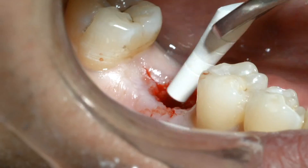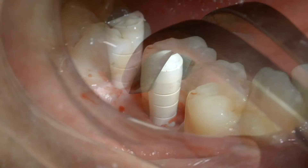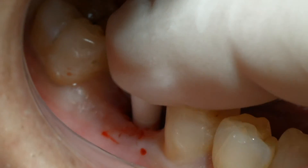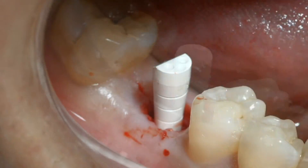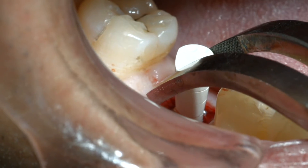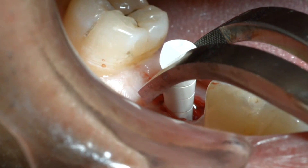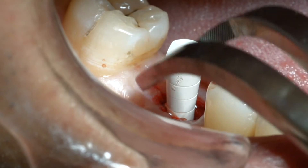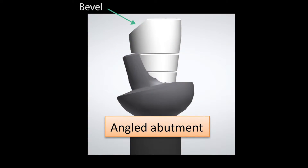The single-use scan post is inserted into the well of the implant or implant analog with only finger pressure, with its beveled side arbitrarily positioned toward the buccal, unless an angled abutment is intended to be used to displace the trajectory of the abutment head in a direction different from that of the implant. If this is the case, the beveled side of the scan post is positioned toward the side of the intended displacement.